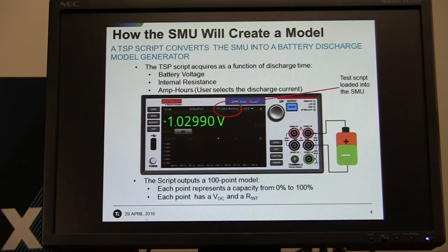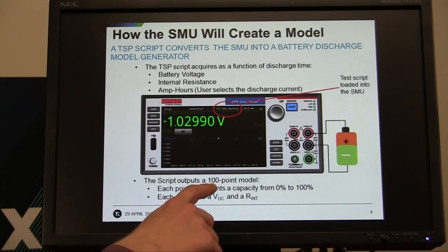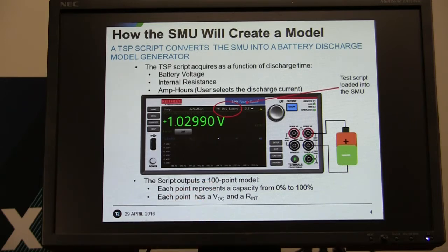When it's done discharging the battery, it's going to produce a 100 point model that can then be loaded back into the 2281S battery simulator to be used to simulate a battery.